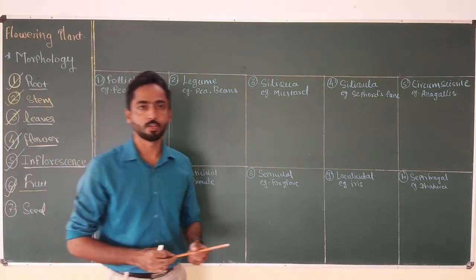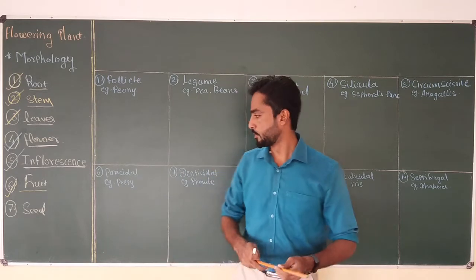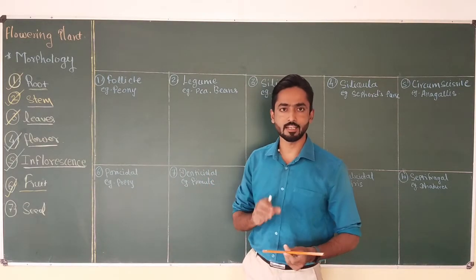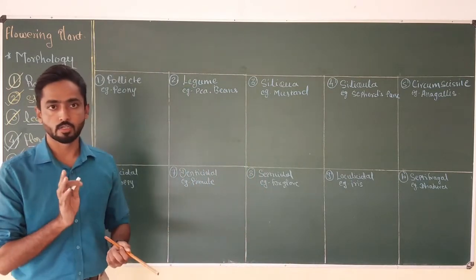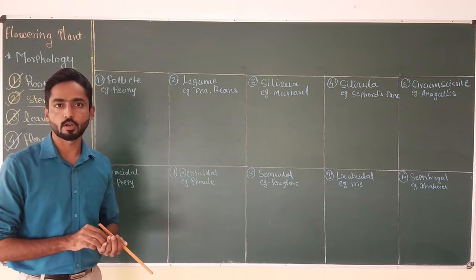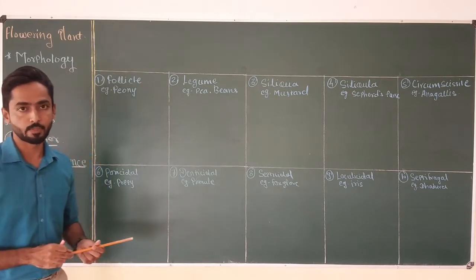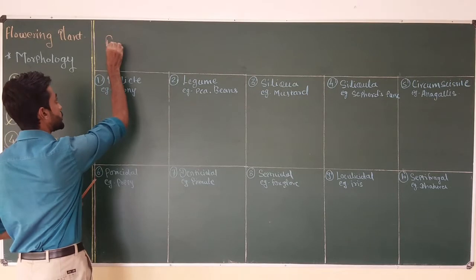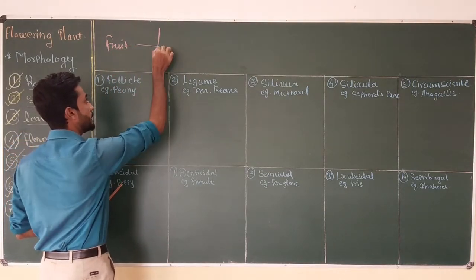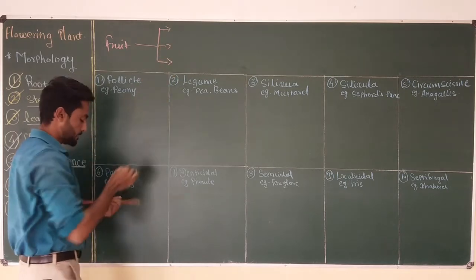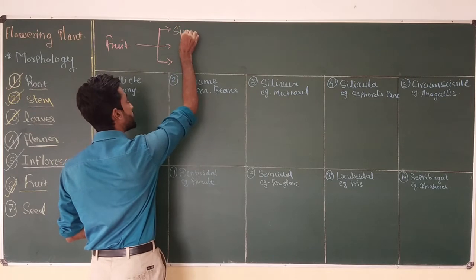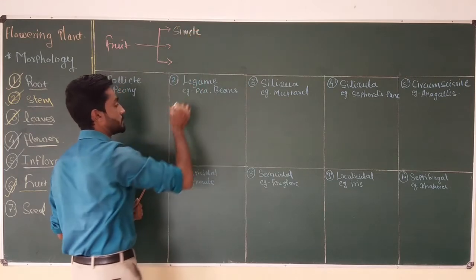Hello everyone. From the last two videos we are talking about the fruits of the angiospermic plant, or flowering plant. In the last video I discussed in detail about the indehiscent type of fruit. Now in this video I'm going to talk about the next type of fruit. Generally the fruits of the angiospermic plant are divided into three main types.